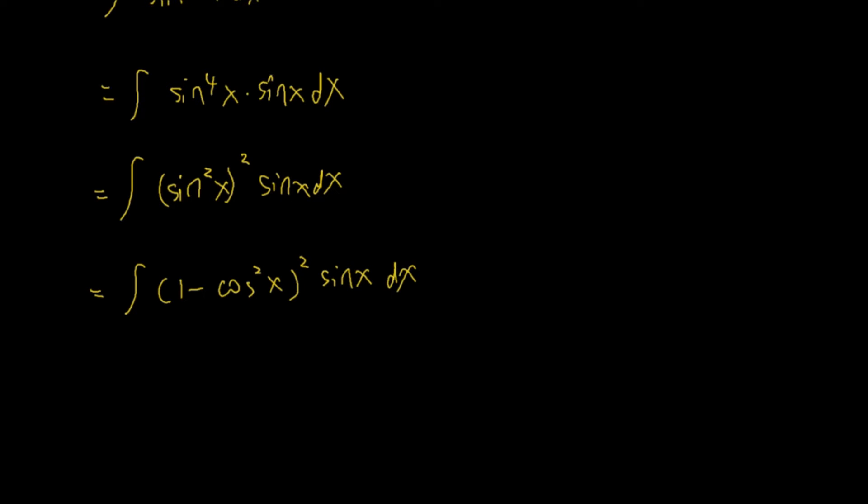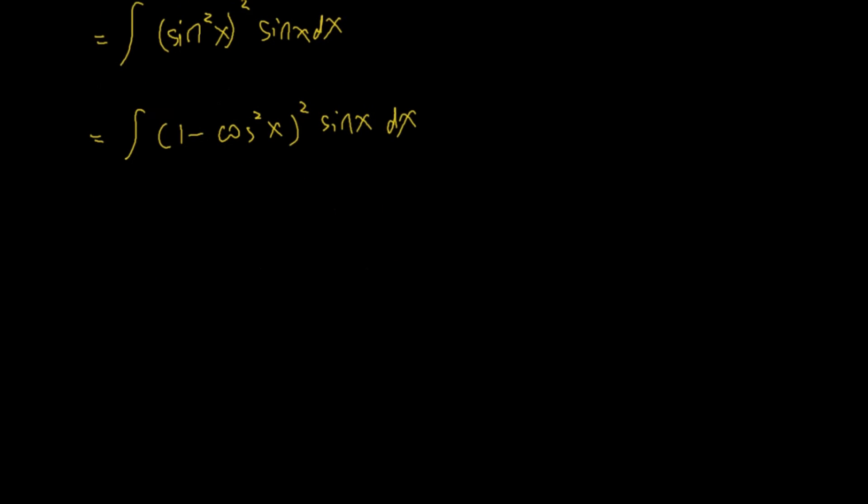We know that the derivative of cosine of x is just negative sine x, then I can always use this one as du. If I use it like that, then I will let u equals to cosine of x, then du/dx is equal to negative sine x. Of course you will isolate dx to replace the dx later.